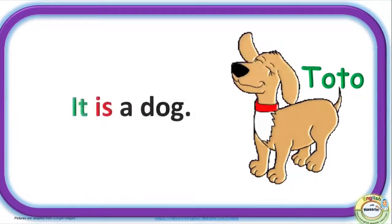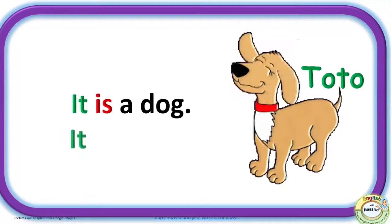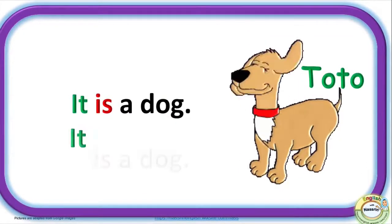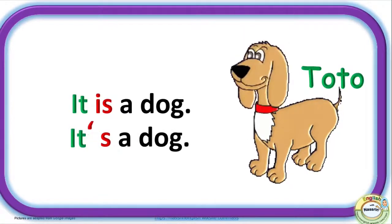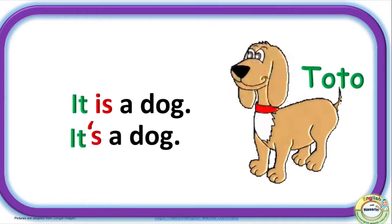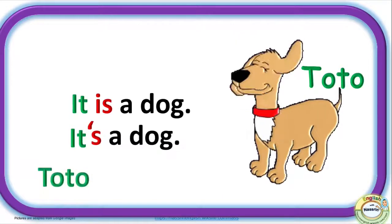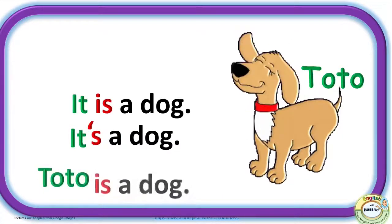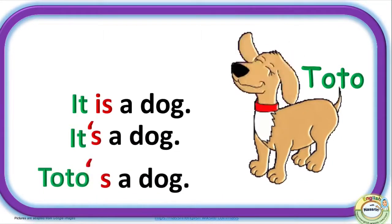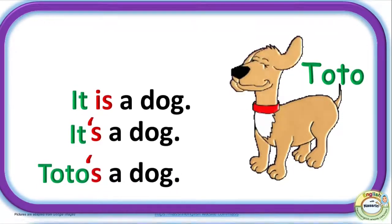It is a dog. The short form is it's a dog. Toto is a dog, and the short form is Toto's a dog.